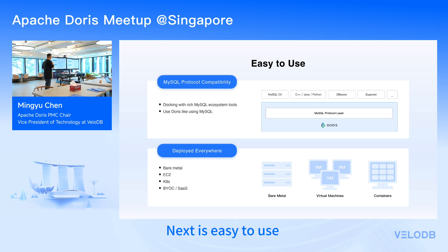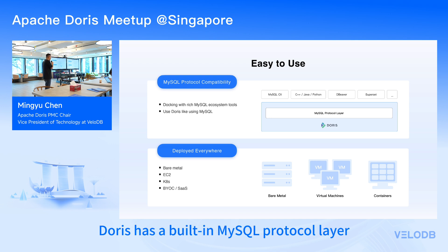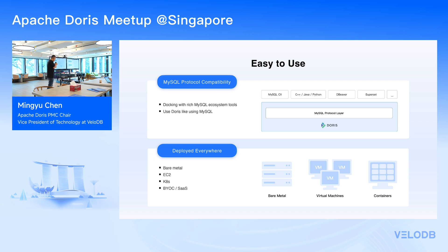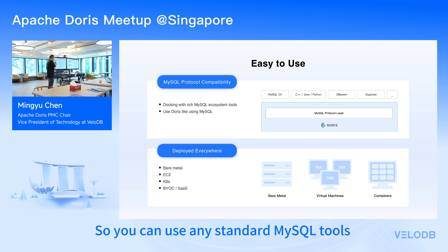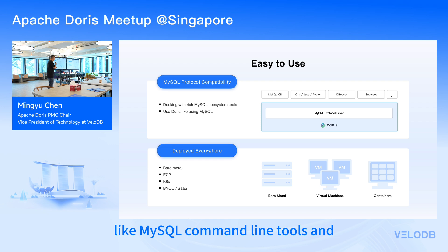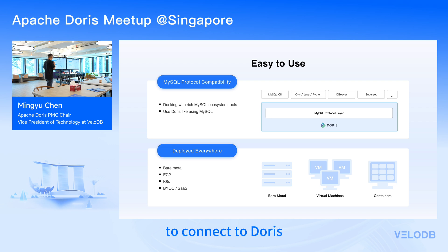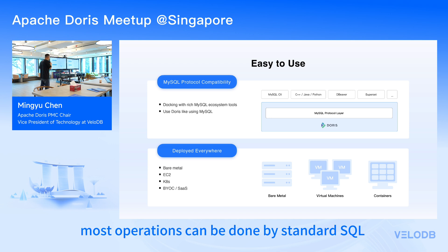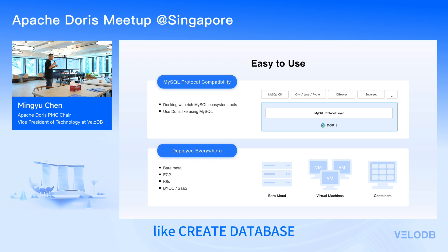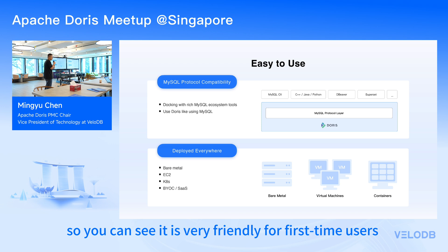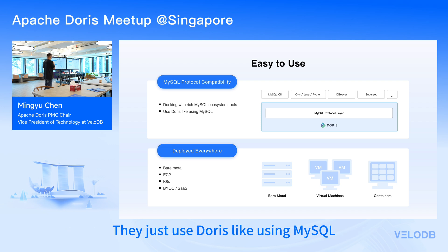Next is easy to use. Doris has a built-in MySQL protocol layer, so you can use any standard MySQL tools — like the MySQL command-line tool — and any libraries from any programming language to connect to Doris. As a relational database, most operations can be done with standard SQL: create database, create table, insert into, and select. It's very friendly for first-time users — they can use Doris just like MySQL.